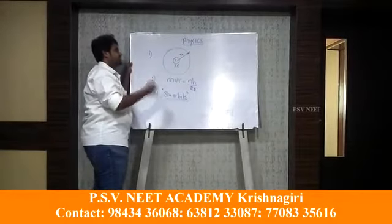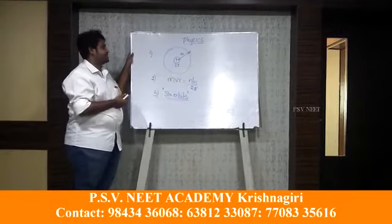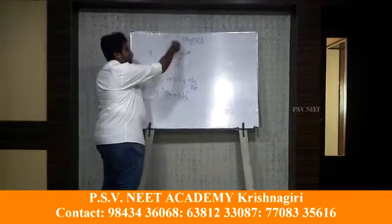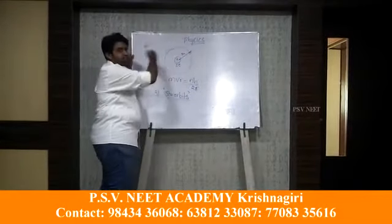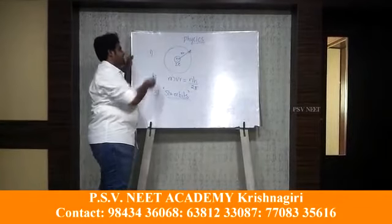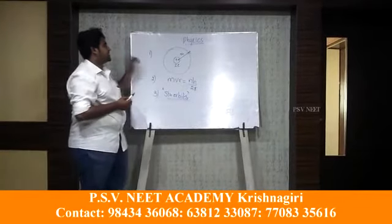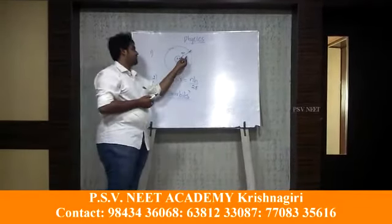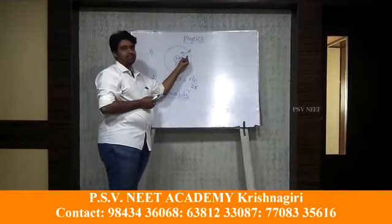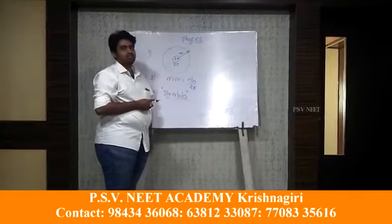Now let us find the radius of the stationary orbits and the velocity of the electron when it is moving in the stationary orbit. For that, I will use the first two postulates. The first postulate states that the electrostatic force between the nucleus and the electron provides the centrifugal force.